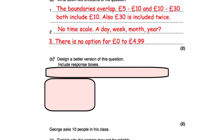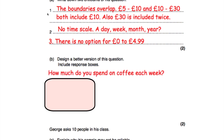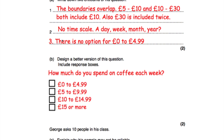Let's have a look at part B, which says design a better version of this question including response boxes. I've written: 'How much money do you spend on coffee each week?' — giving a clear time scale. The response boxes are: £0 to £4.99, £5 to £9.99, £10 to £14.99, and £15 or more. Those boxes cover all options and don't overlap — if it's £5 you tick this one, if it's £10 you tick this one, and so on.